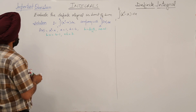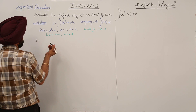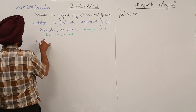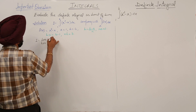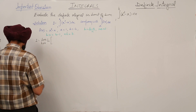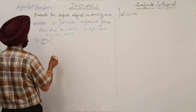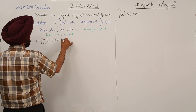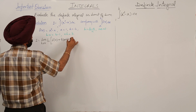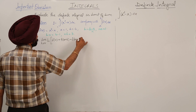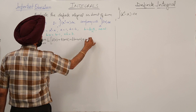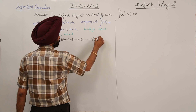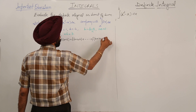Now writing the theorem. The integral equals the limit as h approaches 0 of h times [f(a) + f(a+h) + f(a+2h) + ... + f(a+(n-1)h)].